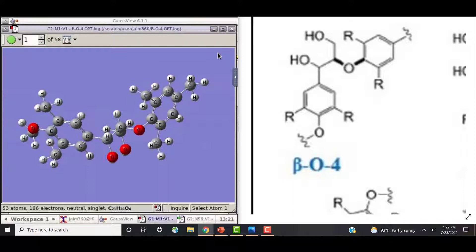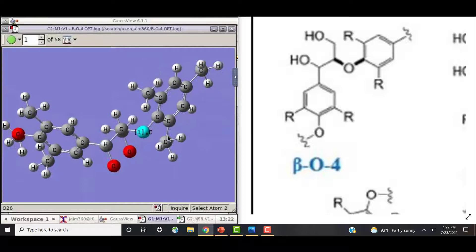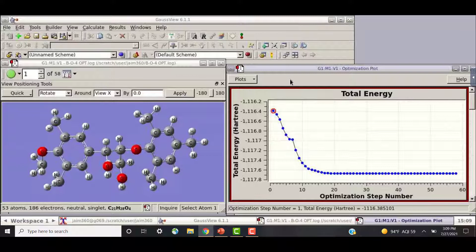If we compare the model alongside with the picture, we can see the beta-O-4 linkage joins the two parts of the molecules. Here we can see the total energy of the optimization and its phase cycle.